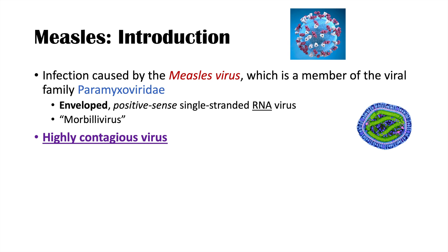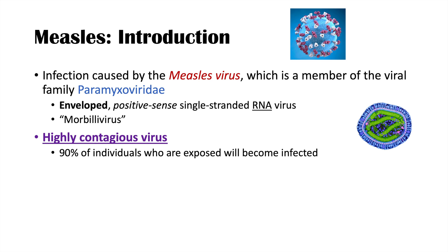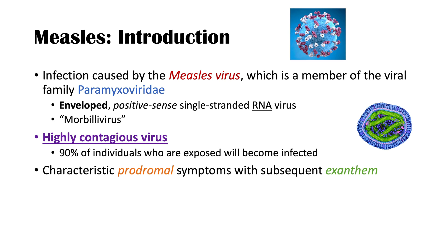What's very important to understand about the measles virus is that it is highly contagious. It's estimated that around 90% of individuals who are exposed to it will become infected. There are characteristic prodromal symptoms and a subsequent characteristic exanthem, or rash, which we'll cover in the upcoming slides.